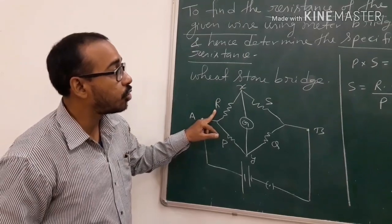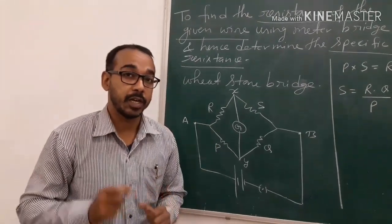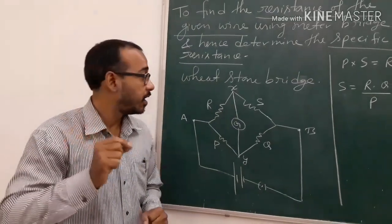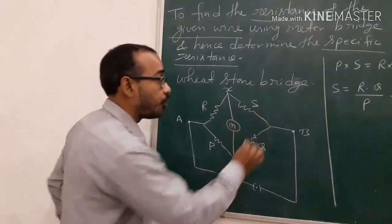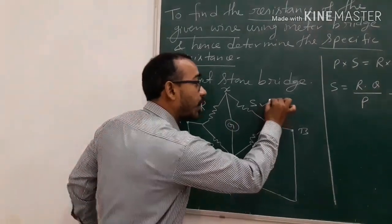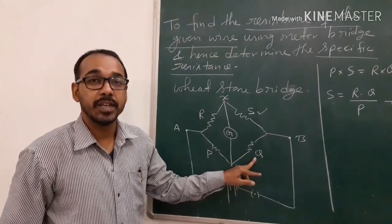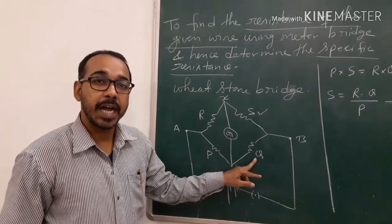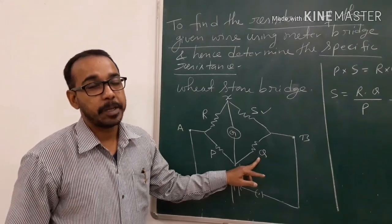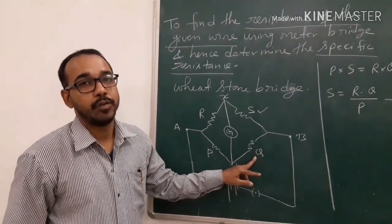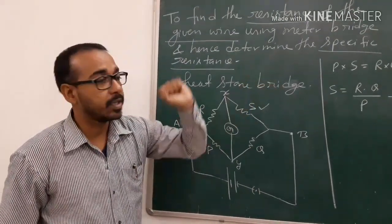In this experiment, R represents the known resistance from the resistance box. S is the unknown resistance whose value we have to find out. P and Q are the two resistances of the slide wire meter bridge, and they depend upon the length of the wire.